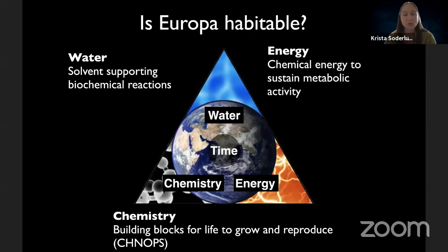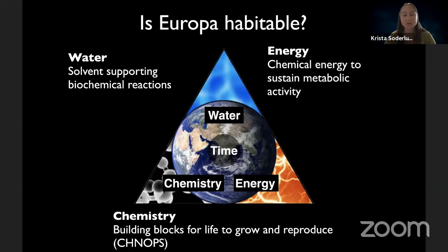Is Europa habitable? There are four ingredients needed for a habitable world: liquid water — essentially checked; appropriate elements, which seems satisfied through accretion and delivery; an energy source for chemical reactions to support metabolism — requiring oxidant and reductant mixing; and time — the long-lived nature of Europa's ocean is a good sign. These are the ingredients to consider for habitability.